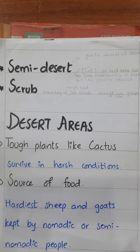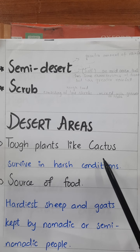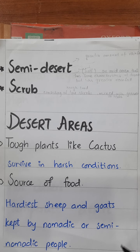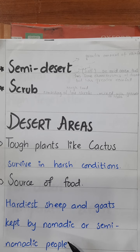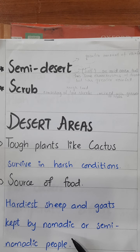In these desert areas, there are only tough plants like cactus which can survive in such harsh conditions. These can provide food only for the hardiest sheep and goats kept by nomadic or semi-nomadic people. The word nomadic means people who wander with their animals in search of food and water.